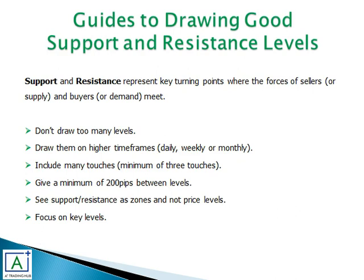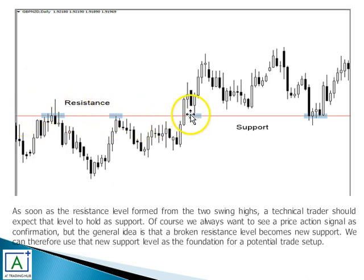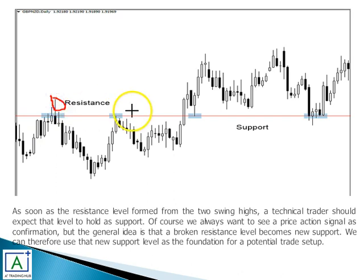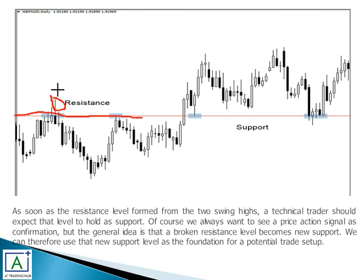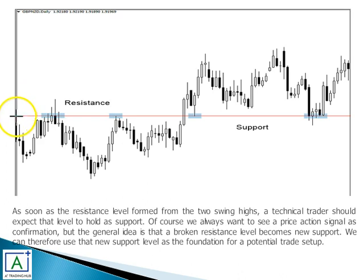See support and resistance levels as zones, not just as price levels. If you treat them as a single price line, on a lower time frame you might think price has broken the resistance and start looking for buys, then suddenly price reverses. You should look at these levels as zones — draw a range rather than just one line.